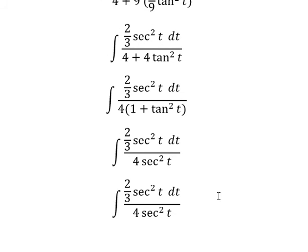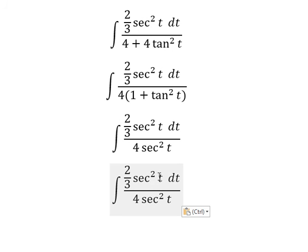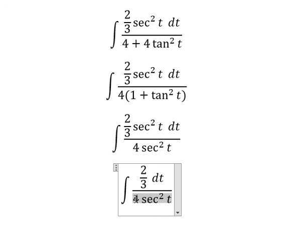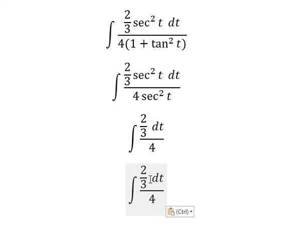And now, we need to simplify secant² t on numerator and denominator. So number 2 and number 4, we simplify.